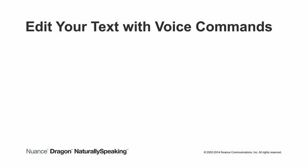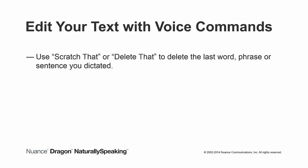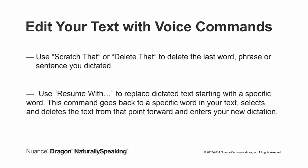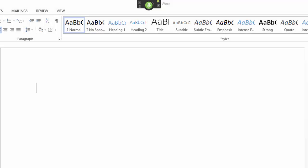Let's start with some commands that you can use to edit your text. You can use the 'scratch that' or 'delete that' commands to delete the last word, phrase, or sentence you dictated. Use the 'resume with' command to replace dictated text starting with a specific word. This command goes back to a specific word in your text, selects and deletes the text from that point forward, and enters your new dictation. The quick brown fox jumped over the lazy dog.